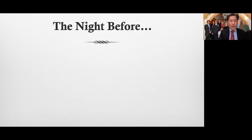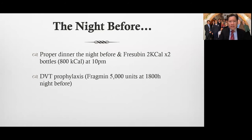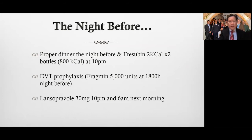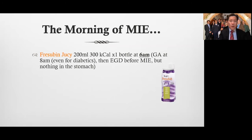The night before surgery, they have a proper dinner and two bottles of Fresubin 2 kcal, giving about 800 kilocalories at around 10 p.m. They get their DVT prophylaxis at 6 p.m. I also give them Lansoprazole at 10 p.m. and 6 a.m. the next morning to reduce secretions. The morning of the operation, they get one bottle of Fresubin Juicy 200 ml, which is 300 kilocalories, at 6 a.m.